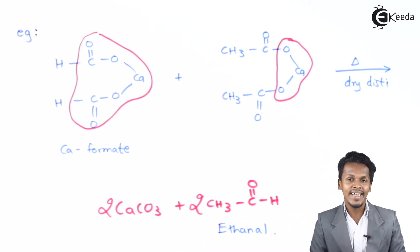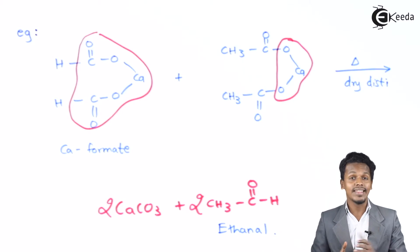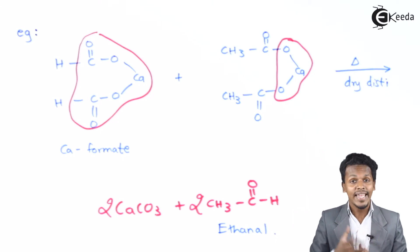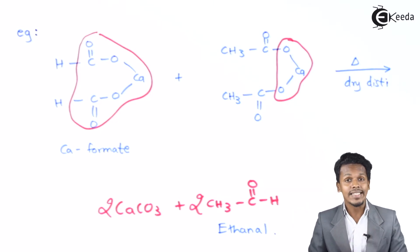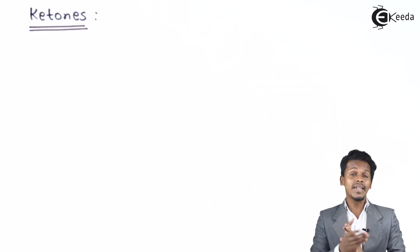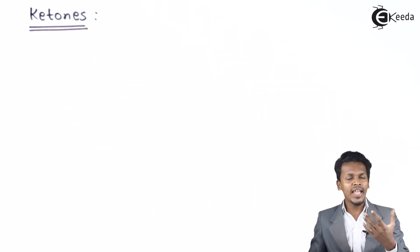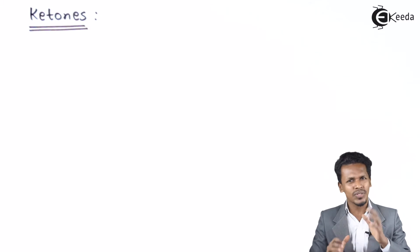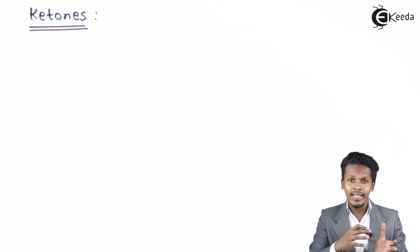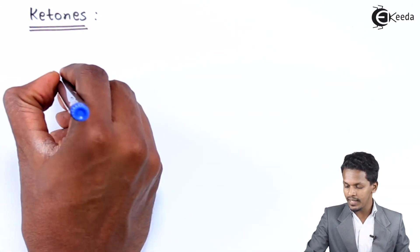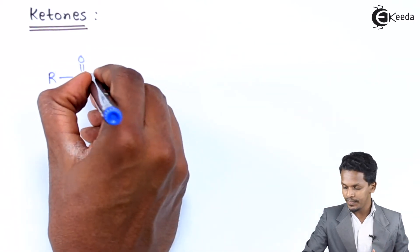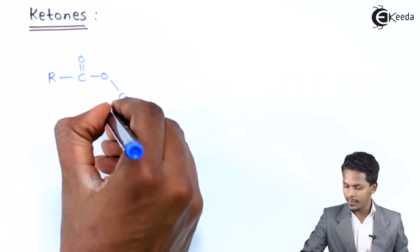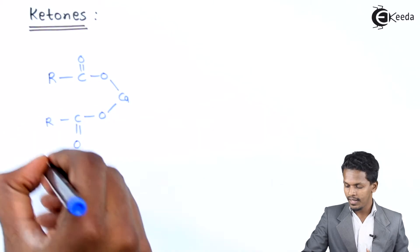This was all regarding the formation of an aldehyde by the decarboxylation of calcium salt of fatty acid. Now let us talk about how we can form ketones by decarboxylation of calcium salt of fatty acid. For that, we have to take the calcium carboxylate in equal proportions; we could also take different calcium carboxylates. I am going to represent the general reaction — a calcium carboxylate having R as an alkyl group.